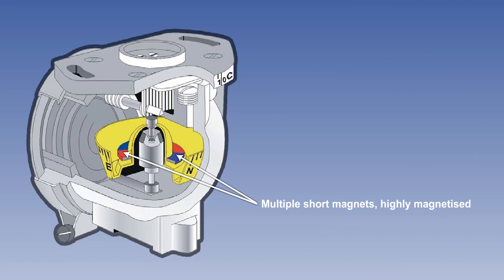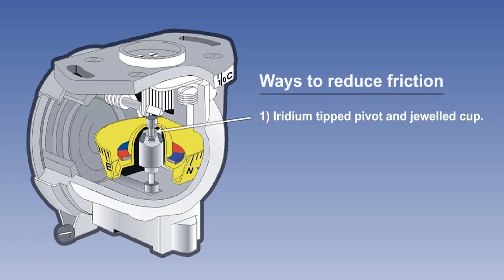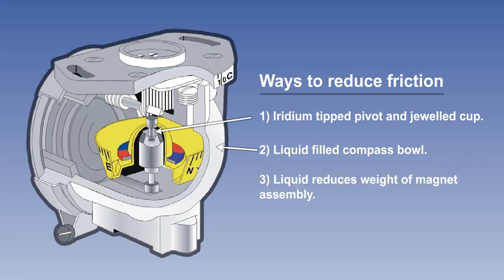So to increase the sensitivity of the compass, multiple short magnets with a high degree of magnetism are incorporated into the magnet assembly. Sensitivity is further increased by reducing friction, and this is achieved in three ways. The first is to use an iridium-tipped pivot in a jewelled cup. The second is the lubricating effect on the pivot by the liquid which fills the compass bowl. And thirdly, the liquid in the compass bowl helps reduce the effective weight of the magnet assembly, as liquid is denser than air.